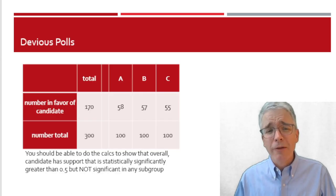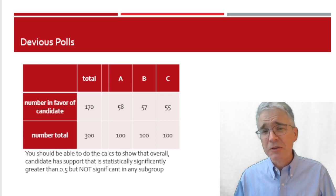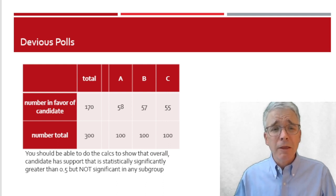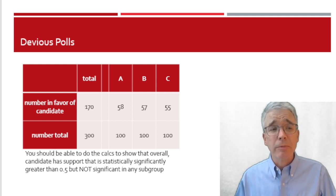Now, you should be able to work out this apparent puzzle, what I've called the devious poll. Overall, if I look at just the total sample, I can see the support in favor of some candidate is 170 people out of 300 and that's statistically different from 0 or 50% at the 5% level. But if I have three subgroups, maybe people in neighborhood A, neighborhood B, neighborhood C, none of the individual subgroups are statistically significant.